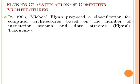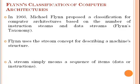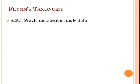Now we will see Flynn's classification of computer architectures. In 1966, Michael Flynn proposed a classification for computer architectures based on the number of instruction streams and data streams — named Flynn's taxonomy. Flynn uses the stream concept to describe a machine's structure; a stream simply means a sequence of items, which includes data or instructions.